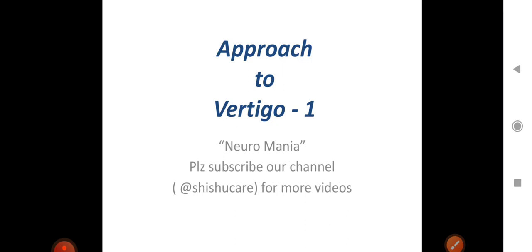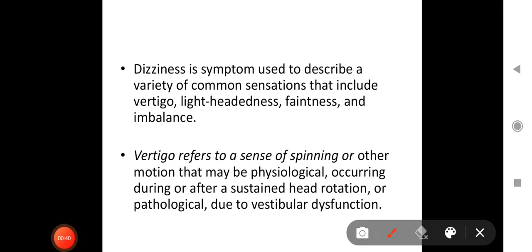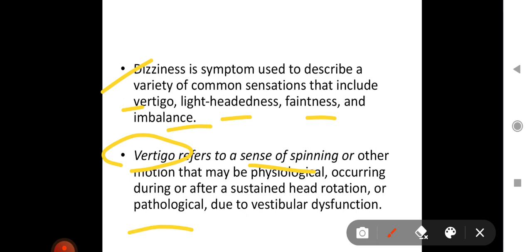We will take this topic in two parts. So, what is dizziness? Dizziness is a symptom used to describe a variety of common sensations that include vertigo, lightheadedness, faintness, and imbalance. Dizziness is a broad term. And what is vertigo? It refers to a sense of spinning or other motion that may be physiological, occurring during or after a sustained head rotation, or pathological, due to vestibular dysfunction.